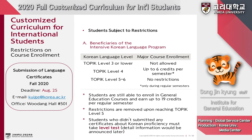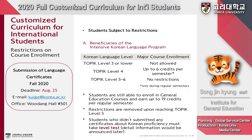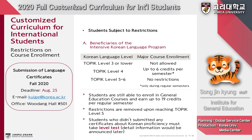Restrictions differ by your Korean language level, as shown in the table. If you have TOPIK level 3 or lower, you cannot take major courses at all. If you have TOPIK level 4, you can take major courses only up to 6 credits per semester. However, even with restrictions on major course enrollment, you can still enroll in general education courses, up to 19 credits per regular semester.